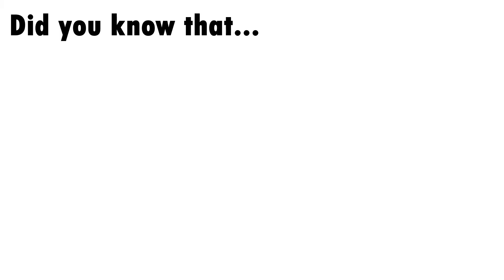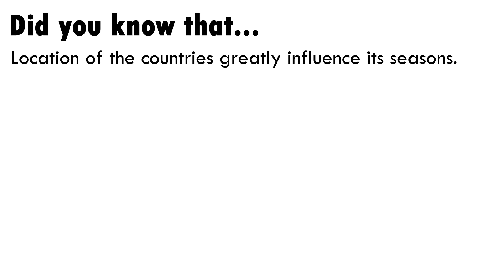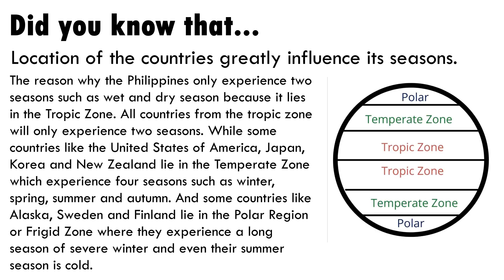The location of a country greatly influences its seasons. The Philippines only experiences two seasons — wet and dry — because it lies in the tropic zone. Countries in the temperate zone, such as the United States, Japan, Korea, and New Zealand, experience four seasons: winter, spring, summer, and autumn. Countries like Alaska, Sweden, and Finland lie in the polar or frigid zone, where they experience a long season of severe winter, and even their summer season is cold.